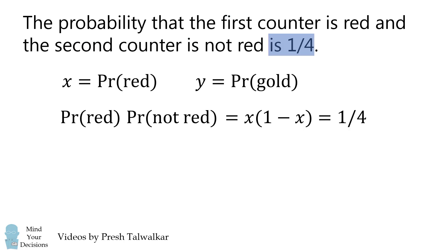Now we need this to be equal to 1 over 4. We have a single equation in just one variable x. So let's expand this out and then solve this quadratic equation. We get the solution that x is equal to 1 over 2.